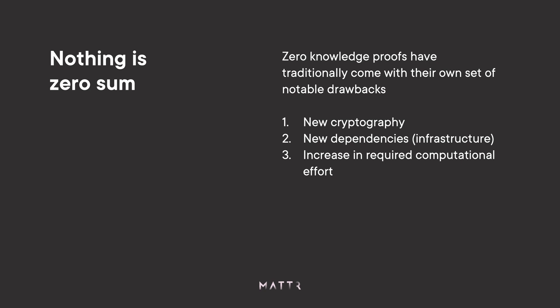Traditionally, ZKPs have also had a massive increase in computational effort required to compute signatures and proofs. That plays back to the infrastructure case — if a normal digital signature algorithm is much easier, faster, and produces much smaller proofs, then you can cope with some of the deficiencies of the highly available issuer or trusted witness model. These are the things we weighed up when looking at zero knowledge proofs.